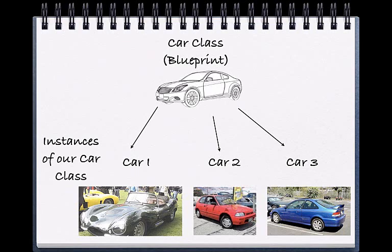In our example on the screen here, you can see our blueprint as well as three instances of our car. Notice that each instance has its own color and attributes.